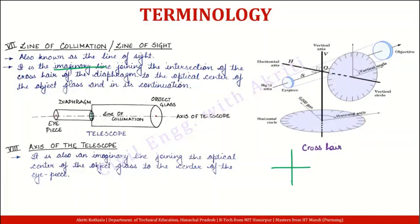So yeh joh cross hair ka point of intersection hai — yeh jo red point hai — is point se aapne line karni hai, aur woh line kahan pe karni chahiye: from the optical center of the object glass. Aapki line cross hair se pass karegi aur object glass se bhi pass karegi. To aapki line of collimation banti hai. Important kya hai — line of collimation is the line joining the intersection of the crosshair of the diaphragm to the optical center of the object glass, and in its continuation. Aur usse continue kar sakta hai jahaan pe bhi aap object sight karein ge.